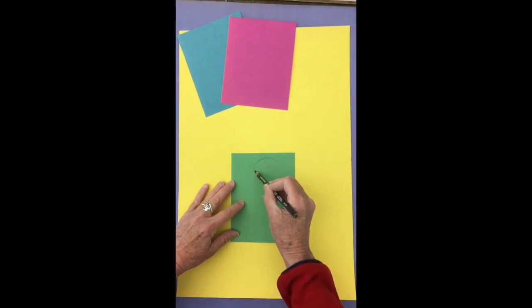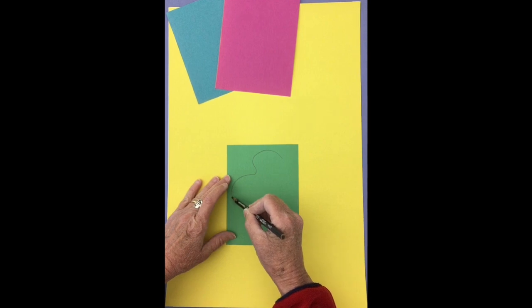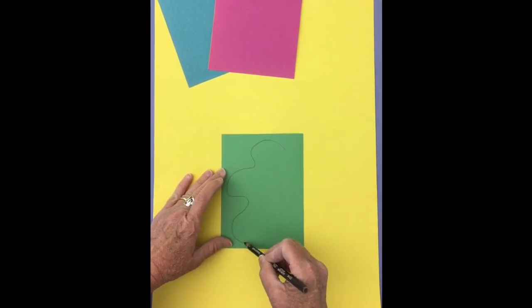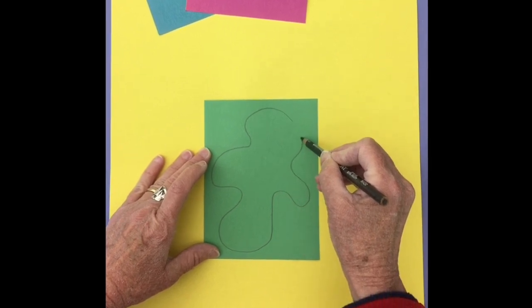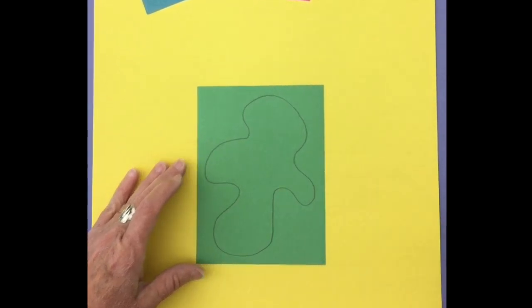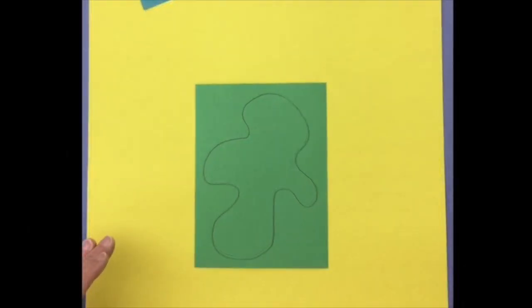You can use a pencil to make a nice swirly organic design. Organic means a shape that doesn't have a name like a square or a circle or a rectangle.